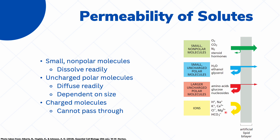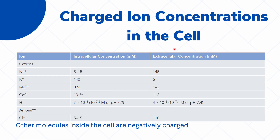Because these ions cannot pass through, what you are left with is varying concentrations of these ions inside the cell and outside the cell. Here you can see the different concentrations of the major cations or positively charged ions inside and outside the cell. Inside the cell, you can find a very high concentration of potassium ions, and outside the cell we find a very high concentration of sodium ions.